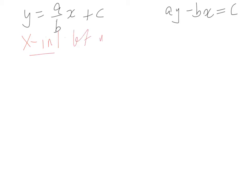Let y equal 0. So we've got then 0 equals a over b times x plus c. We'll move our c to the other side. So I'll make this negative c equals a over b times x. Multiply everything by b.